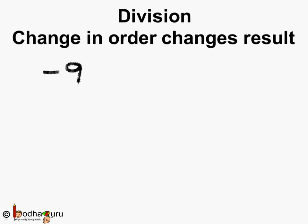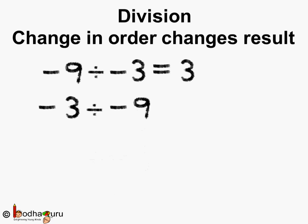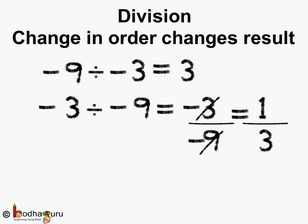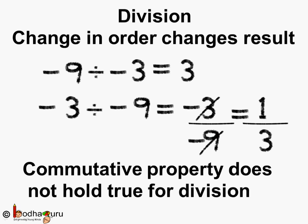Now let us see division. Minus 9 divided by minus 3 — these two are integers — and the answer is 3, because the minus signs cancel each other and 9 divided by 3 is 3. Now let us change the order: minus 3 divided by minus 9. The minus signs cancel, and 3 by 9 reduces to 1 by 3. The two answers are different, so the change in order leads to a change in result. Commutative property does not hold true for division in case of integers.